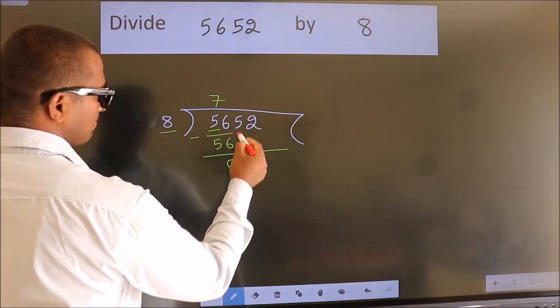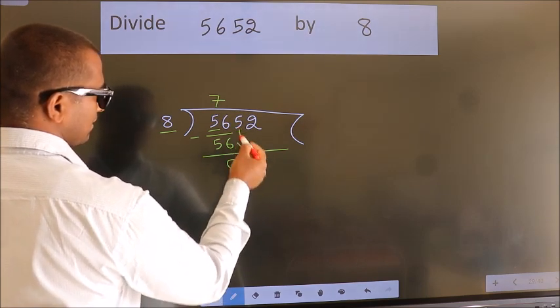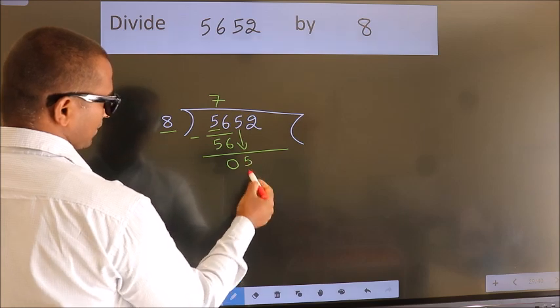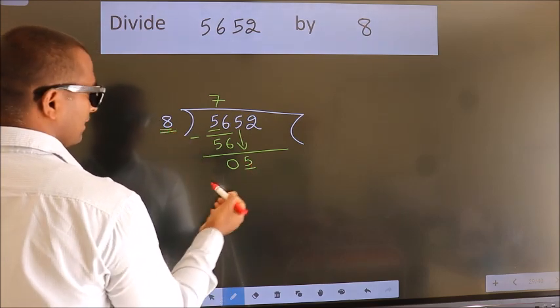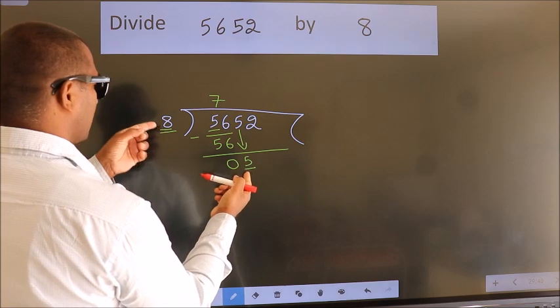After this, bring down the beside number. So 5 down. So here we have 5, here 8. 5 smaller than 8.